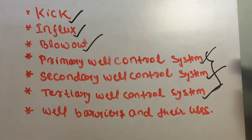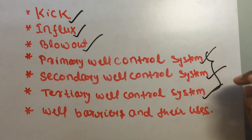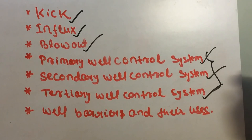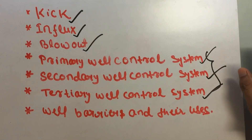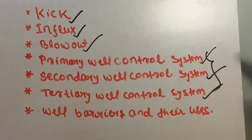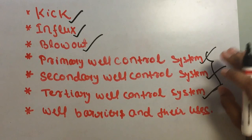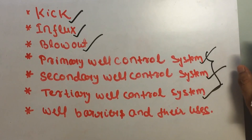If rapid pumping does not succeed, then pump barite or a heavy weight agent to plug the wellbore — meaning close it permanently. The third option is to pump cement into the wellbore to close it permanently. These are the three techniques used in tertiary well control.